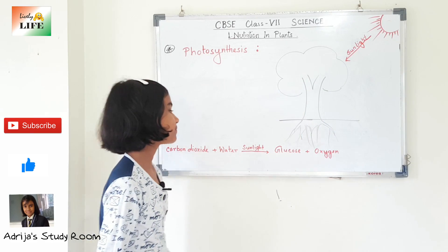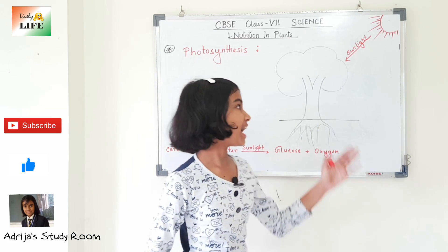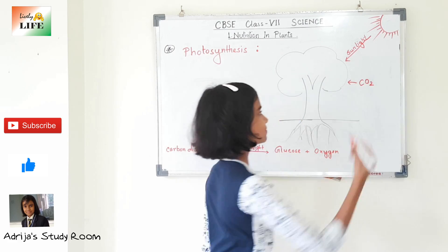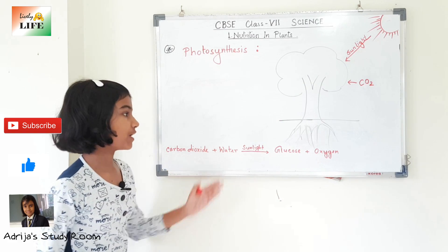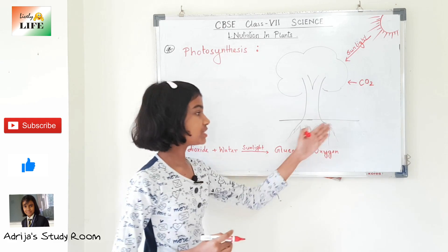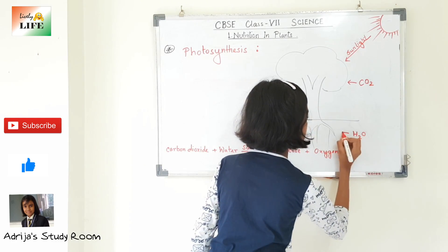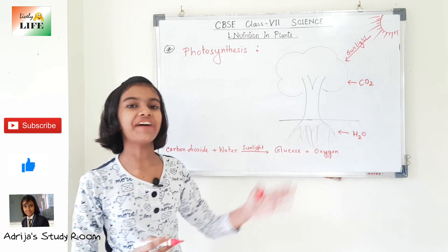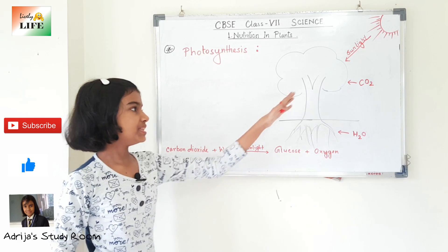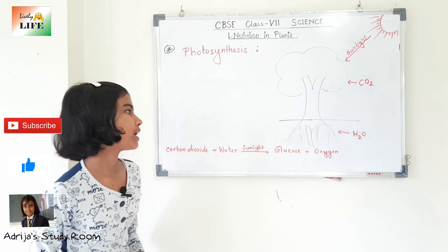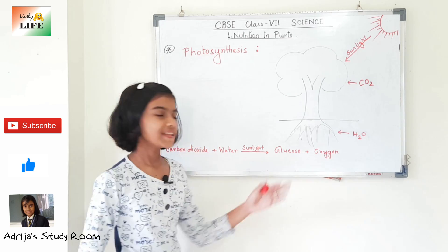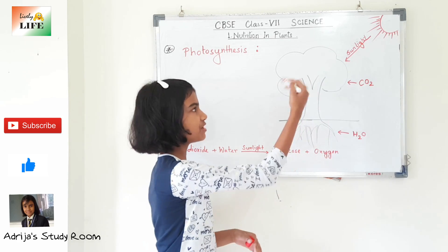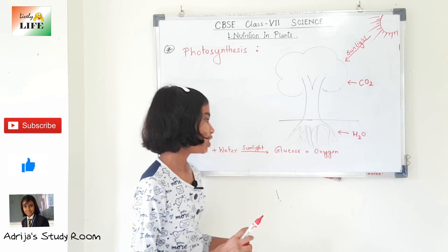The plant has sunlight. Carbon dioxide is absorbed by the leaves from the air. The roots absorb water and minerals from the soil and send them to the food factory of the plant — that is, the leaves. In the leaves, the process of photosynthesis occurs. The end products are glucose and oxygen. The oxygen is released into the air, and the glucose is stored in the form of starch in different parts of the plant.